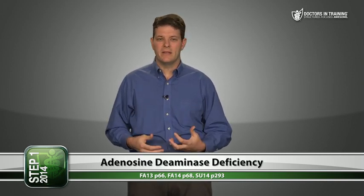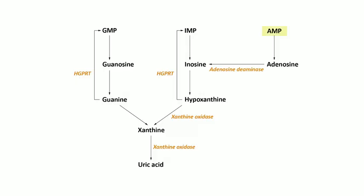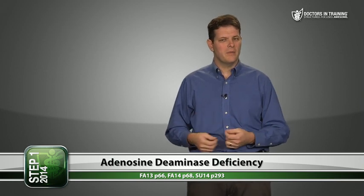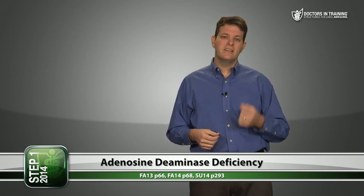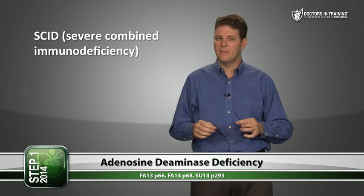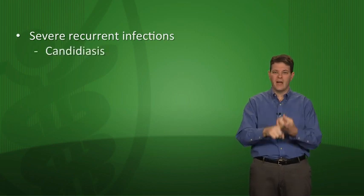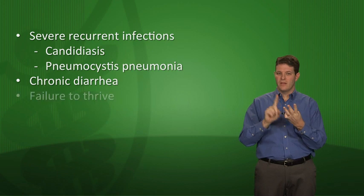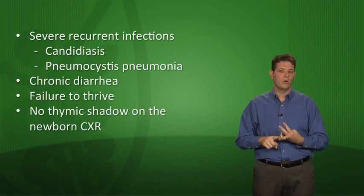Adenosine deaminase deficiency is another disease to mention. AMP is broken down to adenosine, and the enzyme adenosine deaminase converts adenosine to inosine. Adenosine deaminase deficiency is one cause of SCID (severe combined immunodeficiency) — the only one to focus on for Step 1. SCID affects both B and T cells. The clinical triad is severe recurrent infections (like candidiasis or Pneumocystis pneumonia), chronic diarrhea, failure to thrive, and no thymic shadow on the newborn chest X-ray.